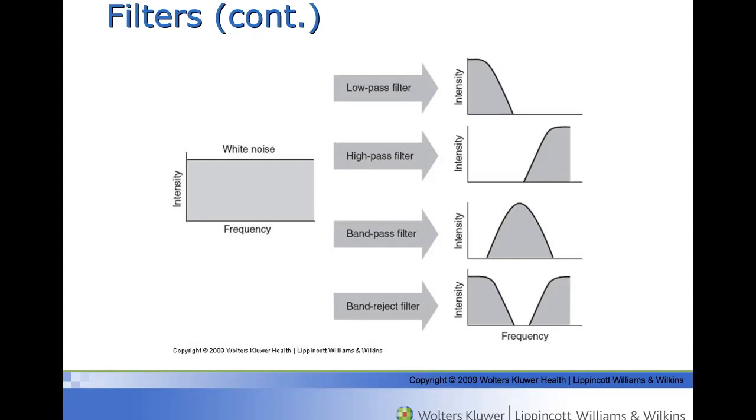A band-reject filter, or notch filter, or stop-band filter, rejects a range of frequencies and passes frequencies that are lower or higher than this band. These filters are used to eliminate 60 hertz hum produced by an AC power supply.